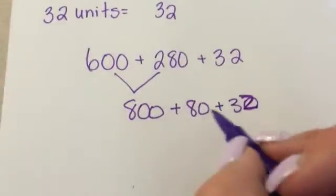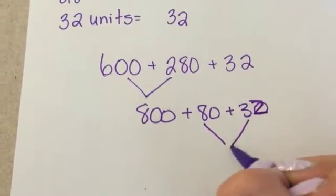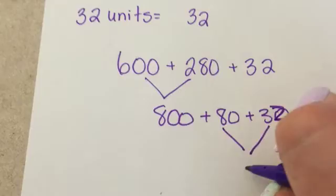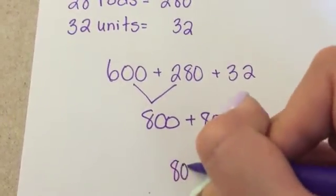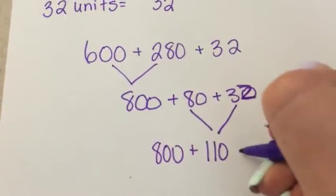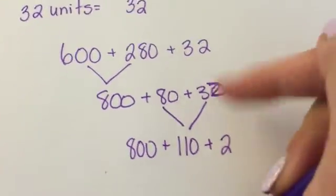Now, I'm going to look at my tens. I have 80 and a 30. And I know that 8 plus 3 is 11. So it has to be 110. So 800 plus 110 plus my 2 from my 32.